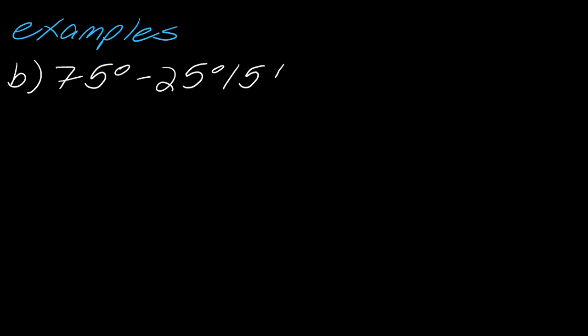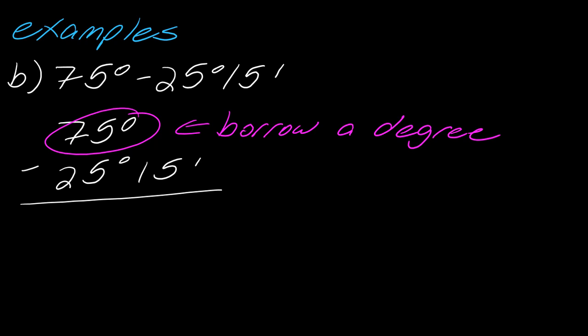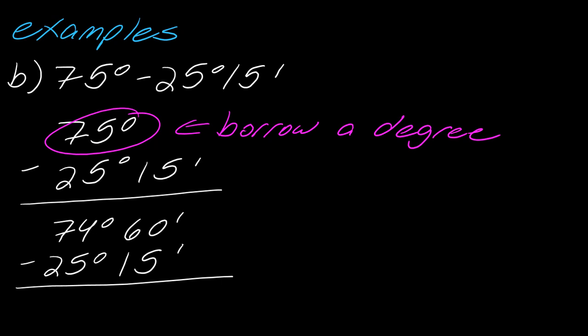If we wanted to go the other direction and subtract — say 75 degrees minus 25 degrees 15 minutes — same setup. The issue is I don't have any minutes to subtract from. When that happens, just borrow a degree: take one degree from the 75 degrees and convert it into 60 minutes, so now I have 74 degrees and 60 minutes. These are totally equivalent, but this allows me to finish the subtraction, giving 49 degrees and 45 minutes.